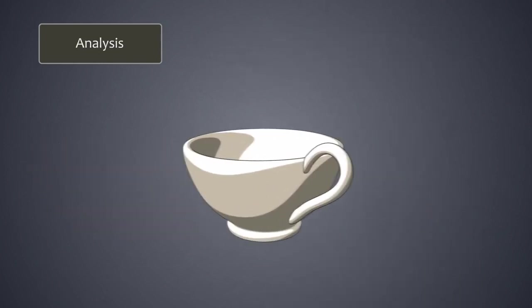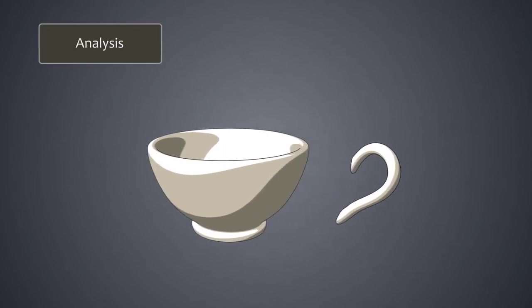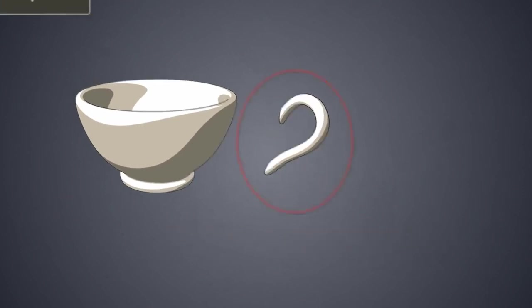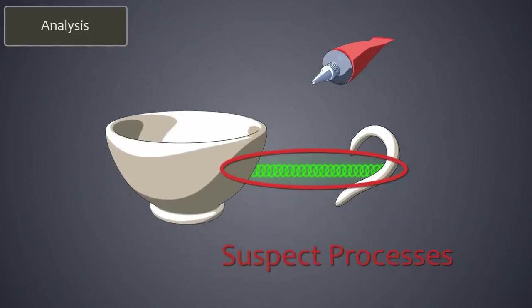If the answer to each of the three elimination questions is no, then the component, in this case the ear, becomes a suspect component and a candidate for integration with another component. Consequently, the process of gluing the ear to the cup also becomes a suspect process.